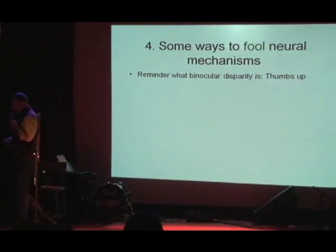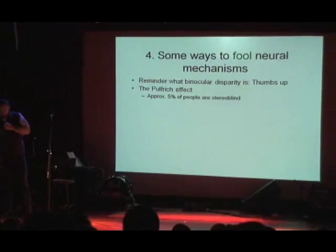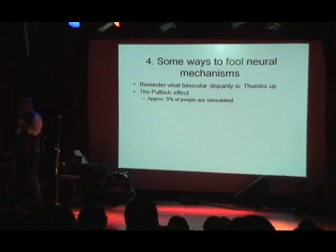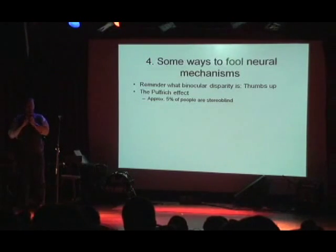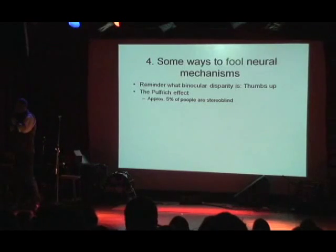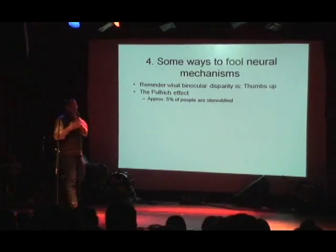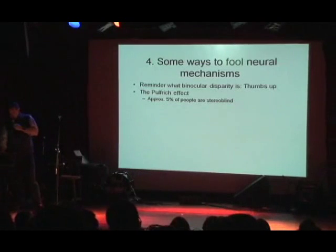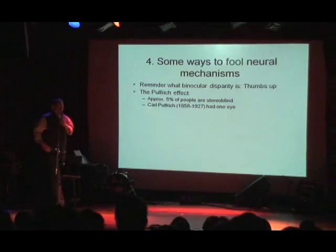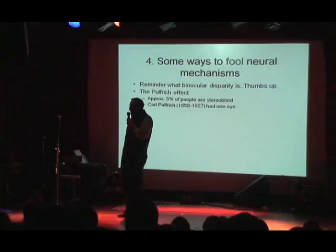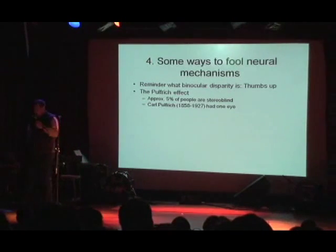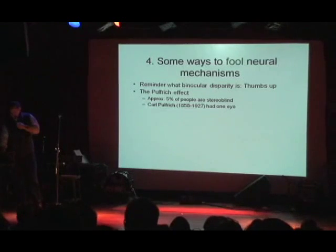Your brain is very good at extracting the small differences between the two eyes' images and inferring depth — that's binocular disparity. We're going to do a demonstration of the Pulfrich effect. About 5% of people are stereo blind, so if you don't have good binocular vision, you're in good company. The man who discovered this effect, Carl Pulfrich, had only one eye. It was entirely theoretical for him — he studied it, did all kinds of measurements and experiments, and never saw it himself.